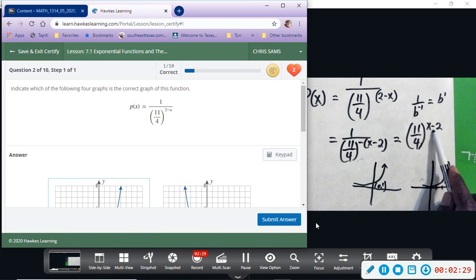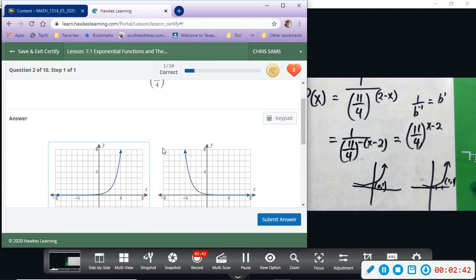So it will still be growth, but because of this transformation, it's going to shift two spaces to the right and go through the ordered pair two comma one. So I'm going to look for a graph that goes through the ordered pair two comma one and that shows exponential growth.